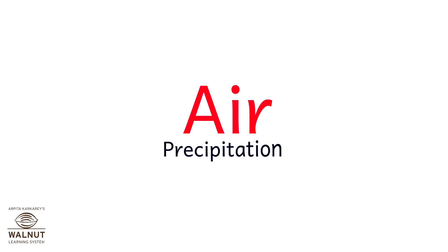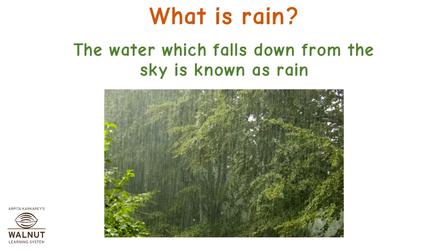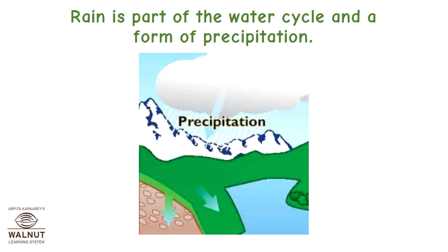Air, Precipitation. What is rain? The water which falls down from the sky is known as rain. Rain is part of the water cycle and a form of precipitation.